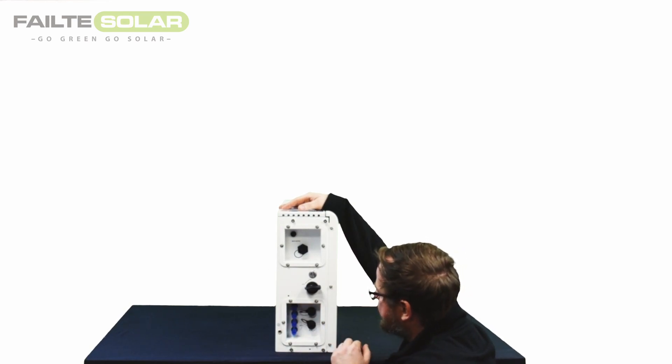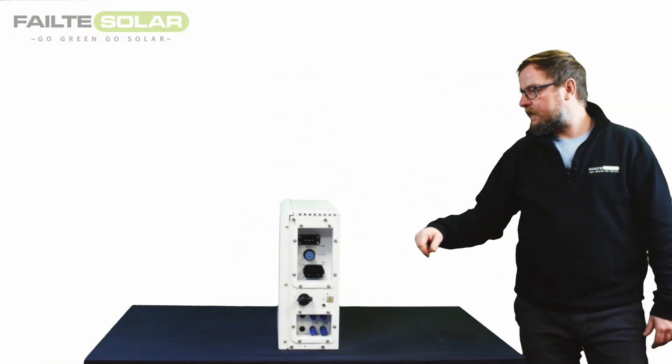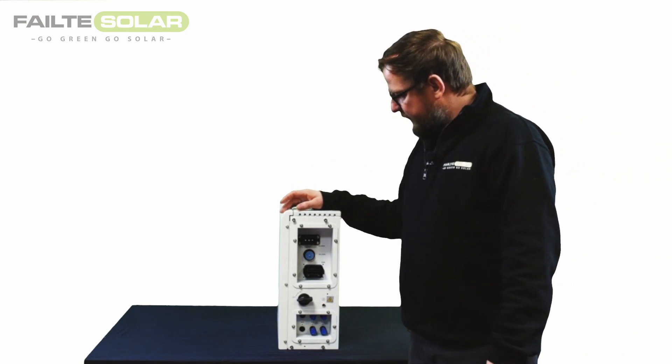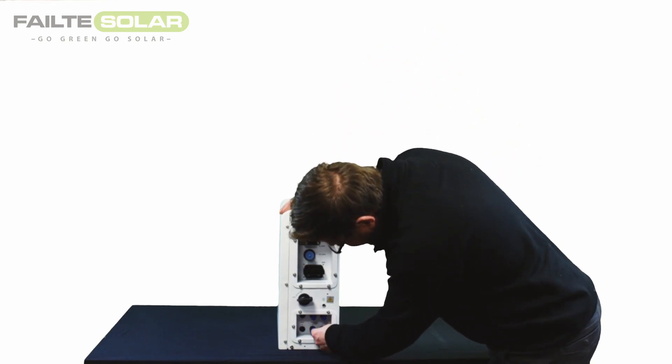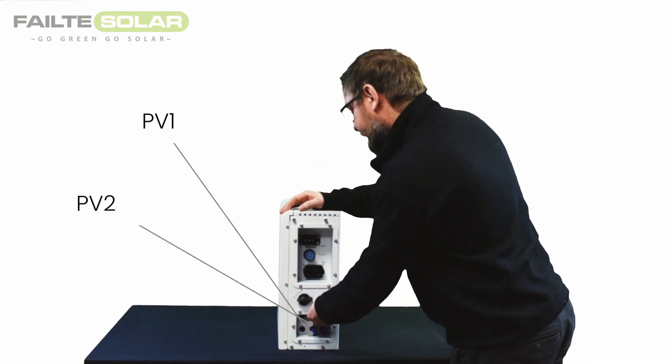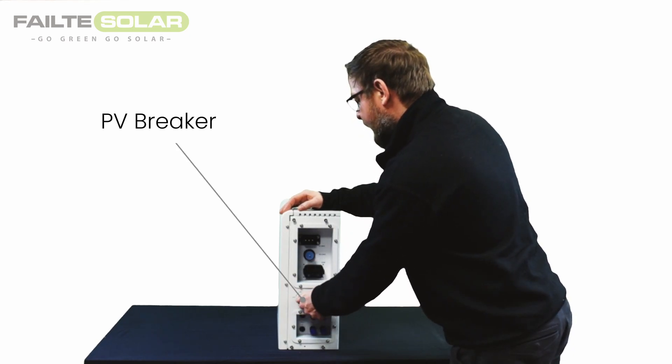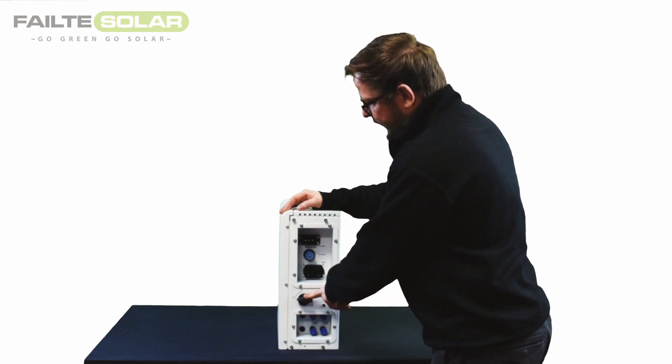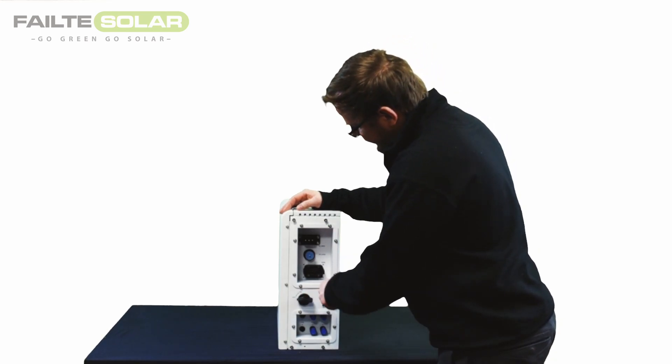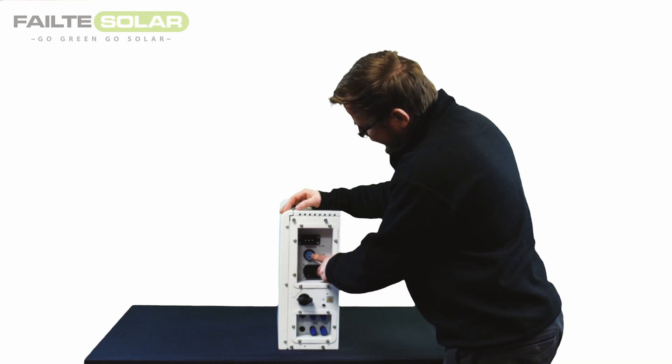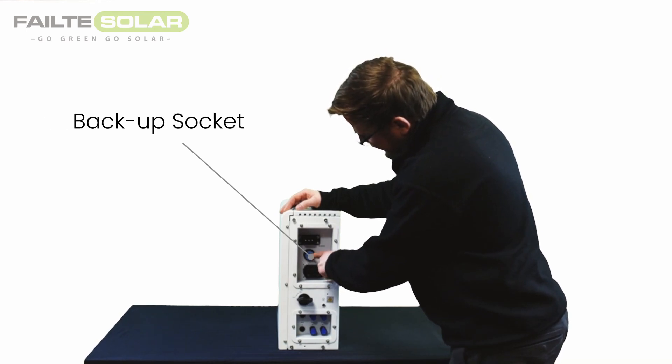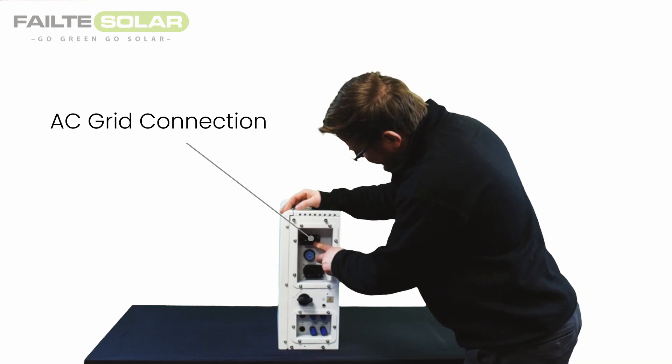So now we moved to the right-hand side of the unit. Right-hand side is where you can find the connections for the PV. PV1, PV2. This is the PV breaker on-off. Nice things about that is you don't need to install external breakers. So next thing is the communication port. Above is the backup socket. And next to it, above is the main AC grid connection.